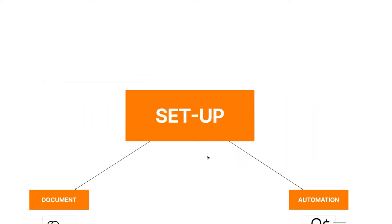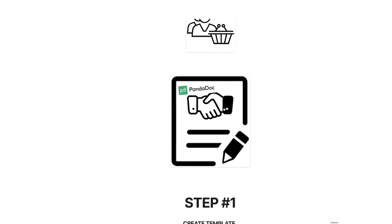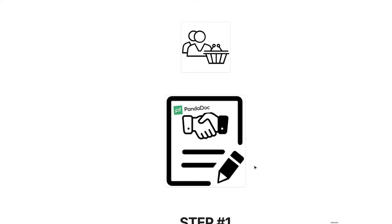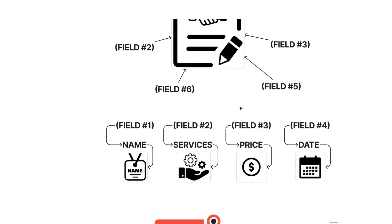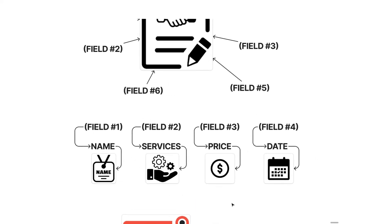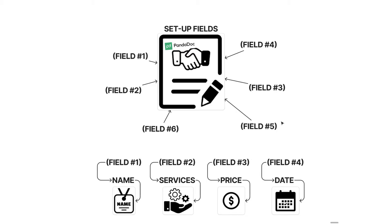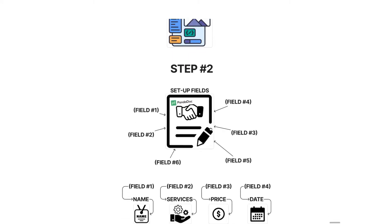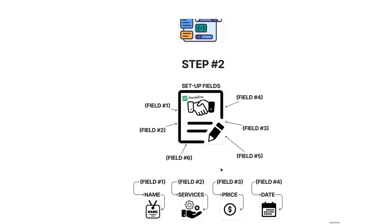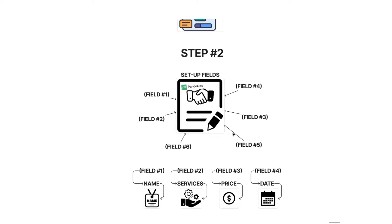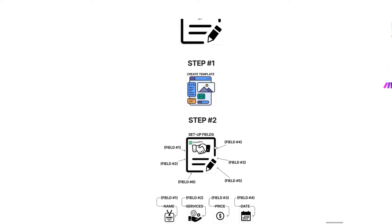In terms of the setup, there's two things we need to do: we need to set up a document and then set up the automation. Step one, we're going to go into PandaDoc and create a template. Step two, we're going to set up fields within our template — things like name, services, price, date — basically anything you want to personalize within the contract. For this example, we're just going to create a simple service agreement and automate the name, services, price, and date.